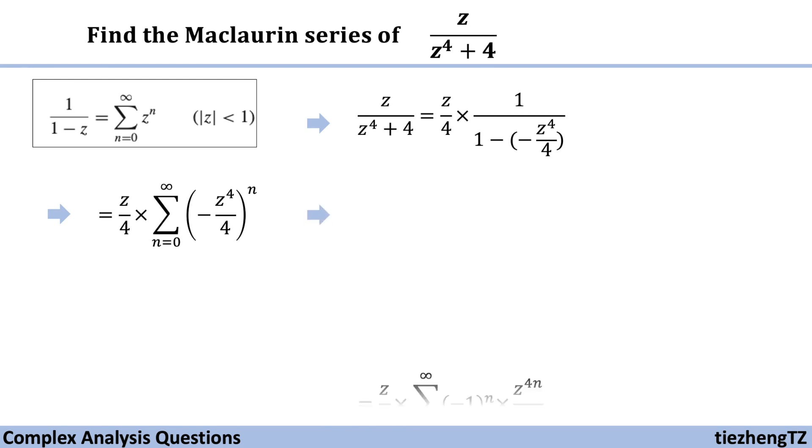And do some optimization, and also add z over 4 within the sum. So we have this solution for this question: the Maclaurin series of the given function has become sum n starts from 0 to infinite...